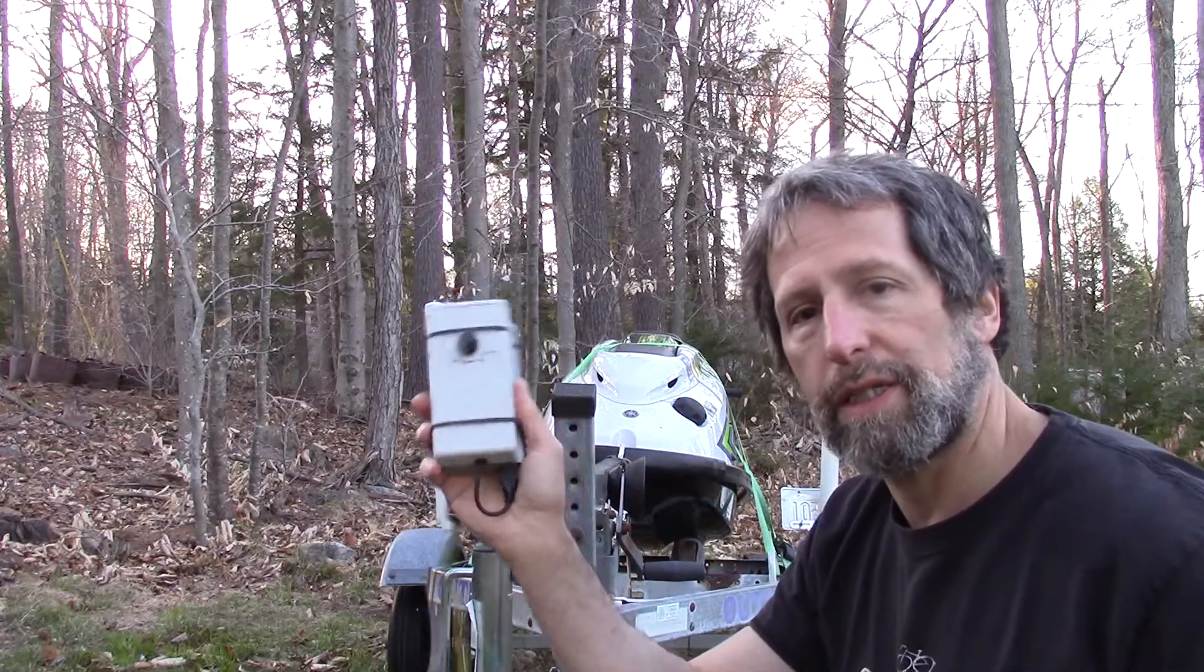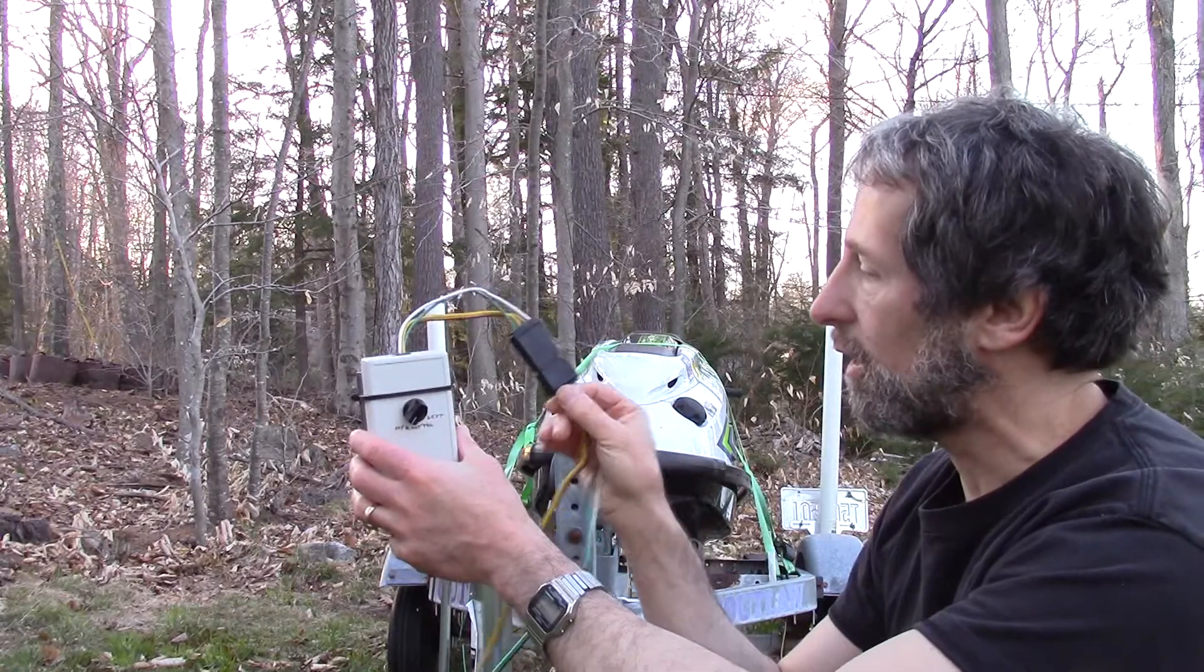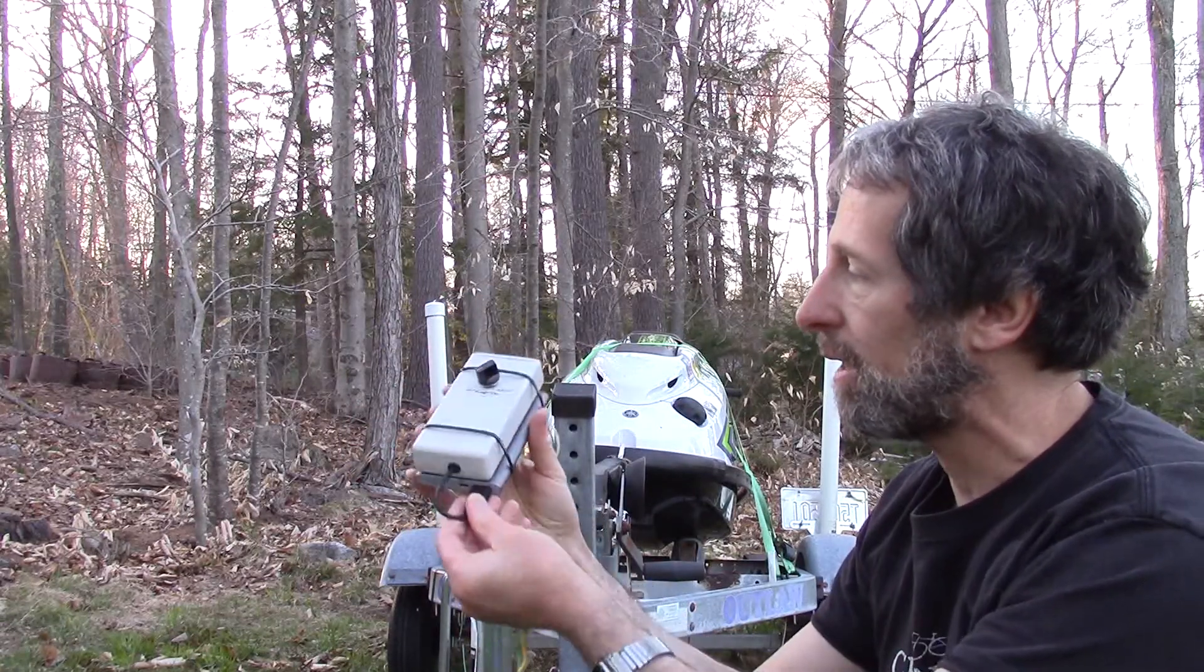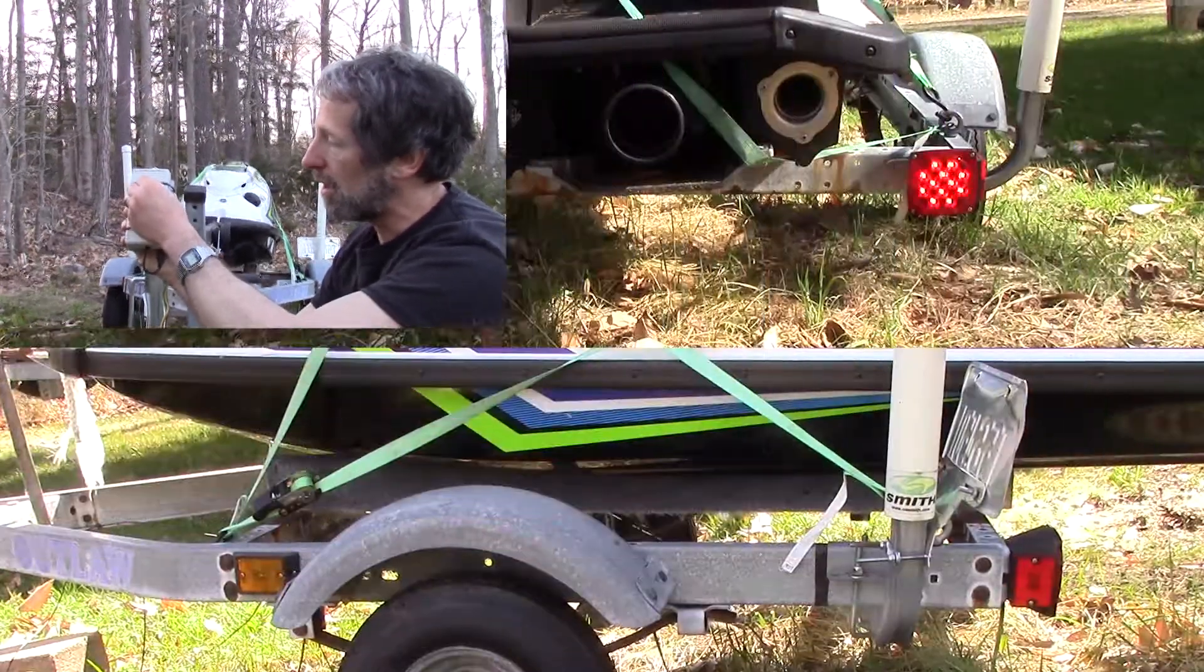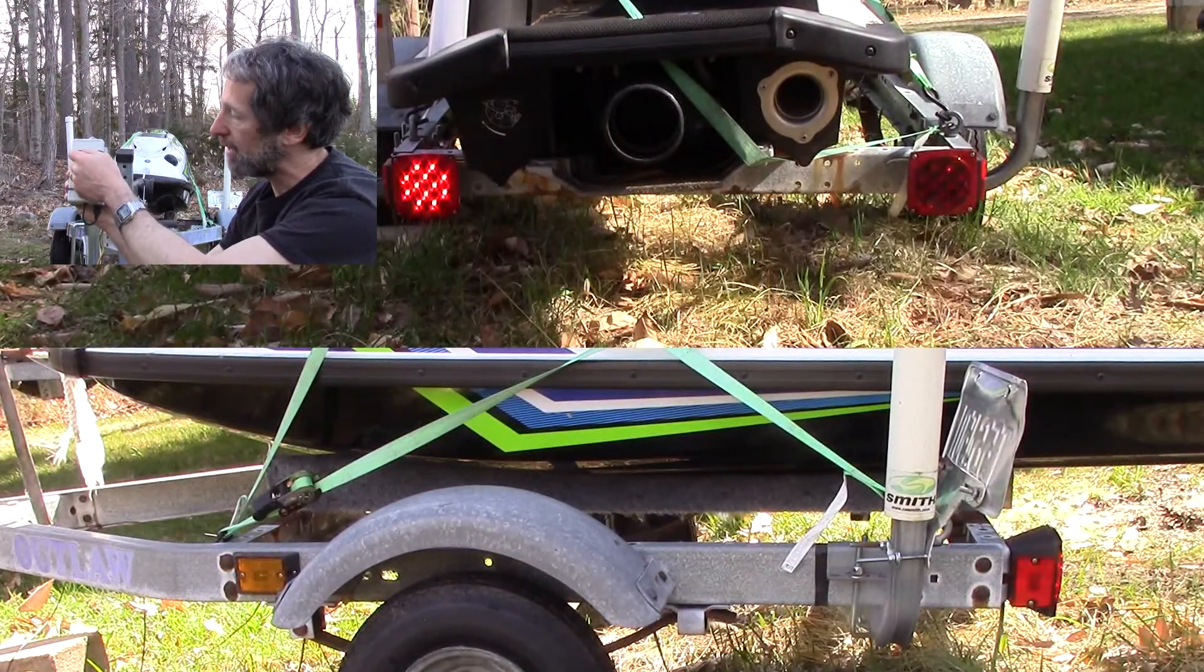Hi, I'm going to show you how to make this tester for your trailer lights. On one side it plugs into your trailer. On the other side it plugs into a USB battery pack. And you just turn the knob to test your right lights, your tail lights, and your left lights.